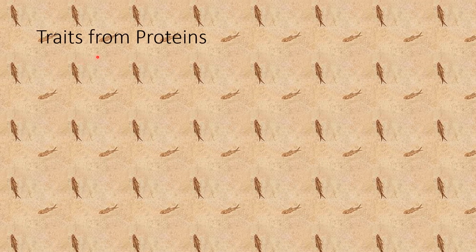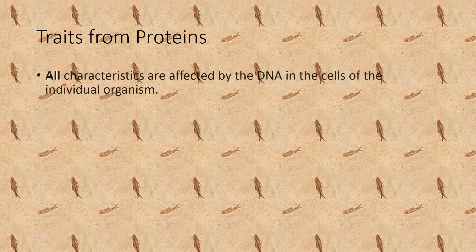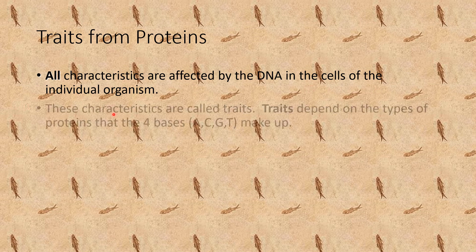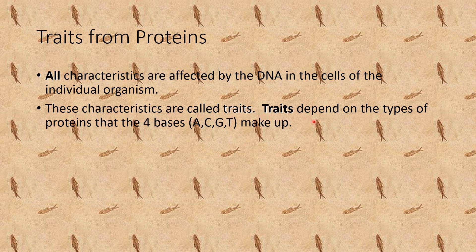Traits from proteins: All characteristics are affected by the DNA in the cells of the individual organism. These characteristics are called traits. Traits depend on the types of proteins that the four bases — A, C, G, T — make up.